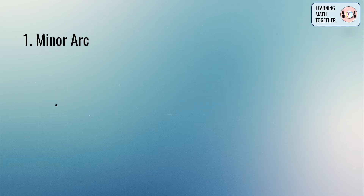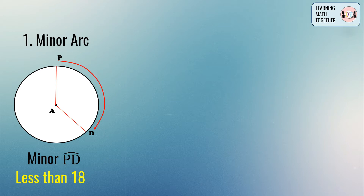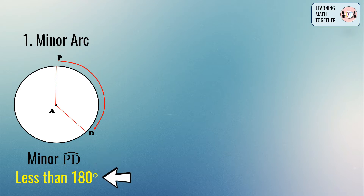Let's focus first on the minor arc. Say for example we have here circle A — arc PD is a minor arc because its measurement is less than 180 degrees. So we can say that an arc is a minor arc if its measurement is less than 180 degrees.